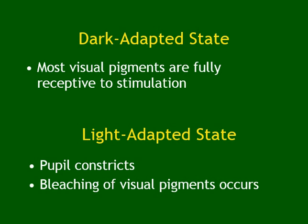During dark adaptation, visual receptors become fully receptive and more sensitive, and the pupil dilates. During light adaptation, the visual pigments bleach and the pupil constricts. When you first enter darkness you cannot see, but after a few seconds or a minute you adapt — and vice versa when entering bright light. This is called light and dark adaptation.